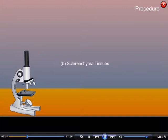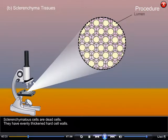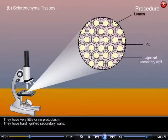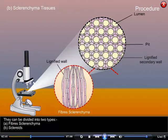B. Sclerenchyma tissues. These cells are dead cells. They have evenly thickened cell walls with very little or no protoplasm. They have hard, lignified secondary walls and can be divided into two types: fibrous sclerenchyma and sclerides.